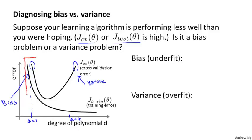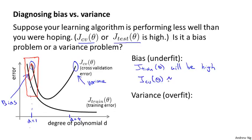This figure gives us a clue for how to distinguish between these two cases. For the high bias case — the case of underfitting — both the cross validation error and the training error are going to be high. So if your algorithm is suffering from a bias problem, the training set error will be high, and you might find that the cross validation error will also be high — perhaps just slightly higher than the training error. If you see this combination, that's a sign your algorithm may be suffering from high bias.